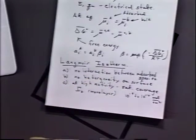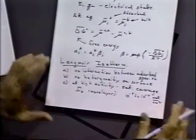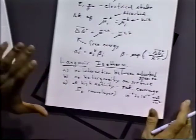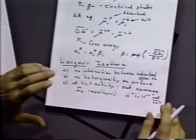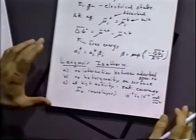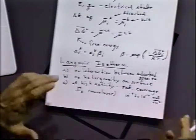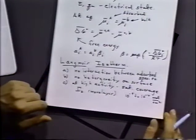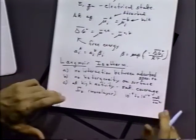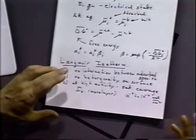So if we have what they call a monolayer coverage of materials, we tend to talk about 10⁻⁹ to 10⁻¹⁰ moles per square centimeter. Now if you have a really big molecule like an enzyme, that amount would be smaller by about an order of magnitude.